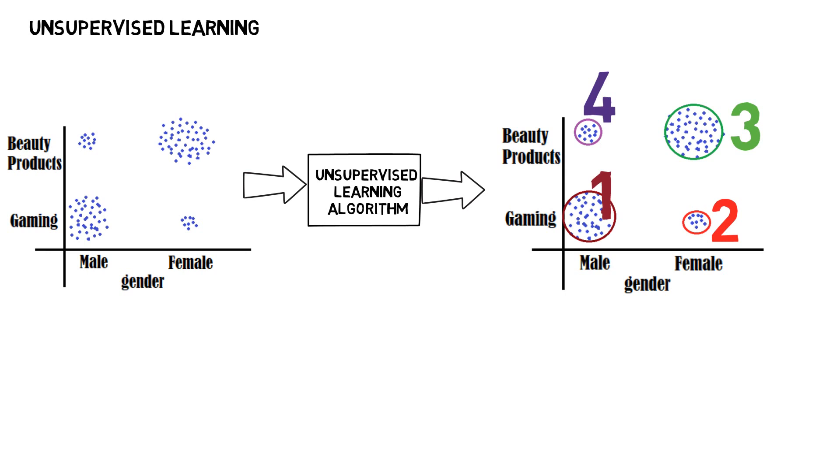Once the pattern is ready, it can be very helpful. For example, let's assume we have a beauty product for men. We can easily target this product for cluster 4 instead of targeting all the people. This will reduce the advertising cost significantly.